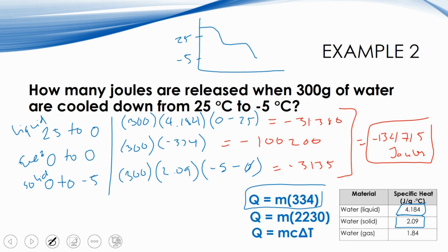Our final answer is a negative value in joules — not because energy is negative, but because energy was released in the process. This is how much energy must be removed from 300 g of water at 25°C to decrease it to −5°C. For all water calculations, the constants stay the same; only the mass and temperatures change. Be very careful to determine which states and phase changes are involved. In later videos we'll do more examples, but for today we need to do some practice.